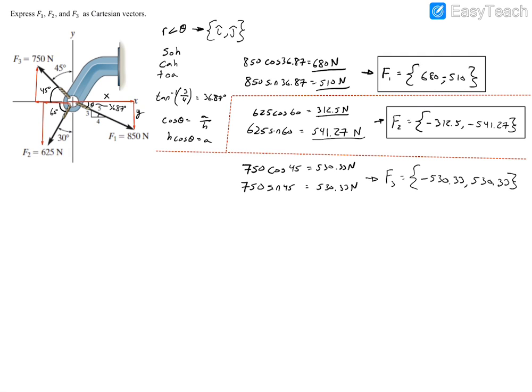And, there you have it. These are your three Cartesian vectors for force F1, F2, and F3.